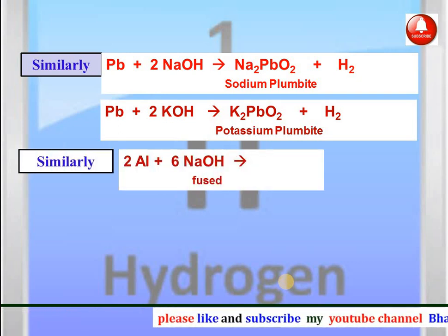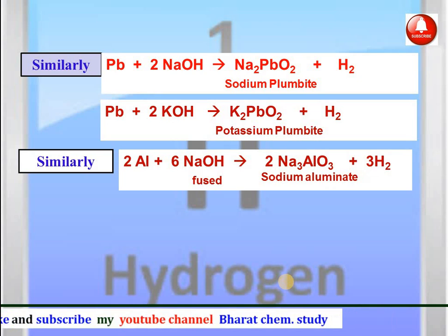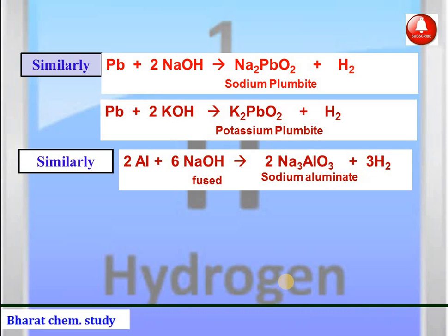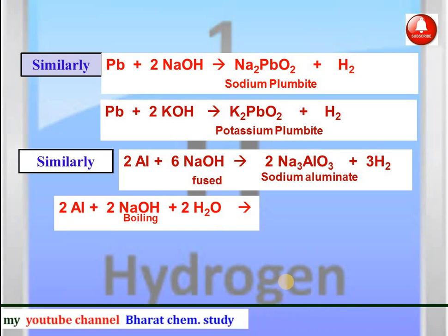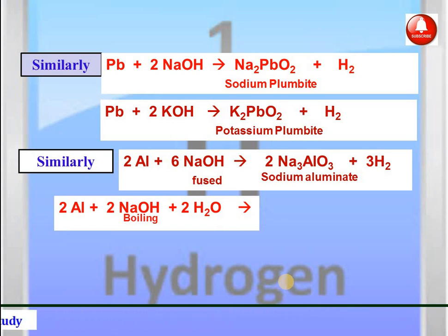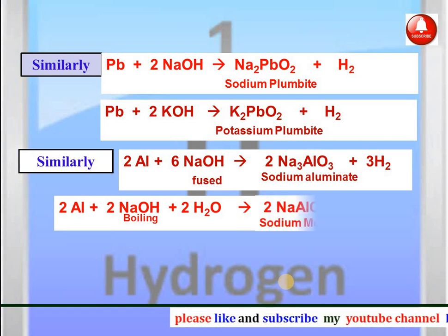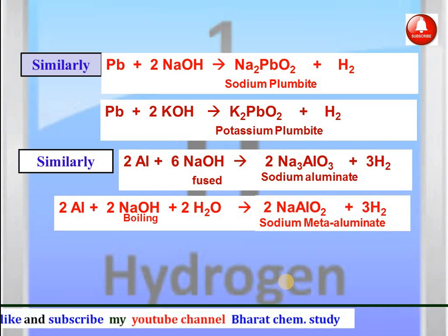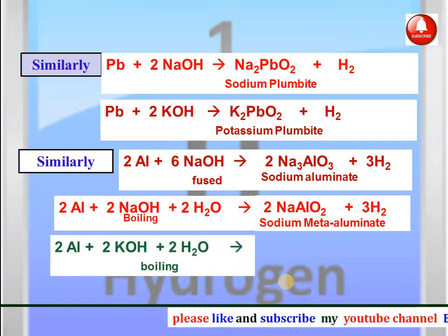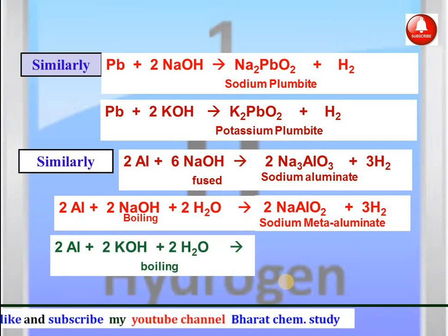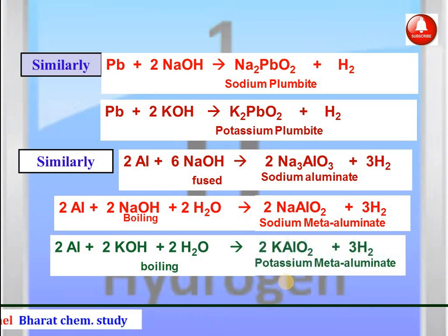Aluminium reacts with fused NaOH to give sodium aluminate with formula Na3AlO3 and hydrogen gas. But when aluminium reacts with boiling NaOH in the presence of water — it is very important to write water here — the product formed is sodium meta-aluminate with formula NaAlO2 and hydrogen gas. Similarly, aluminium can react with boiling KOH in the presence of water to give potassium meta-aluminate and hydrogen gas.